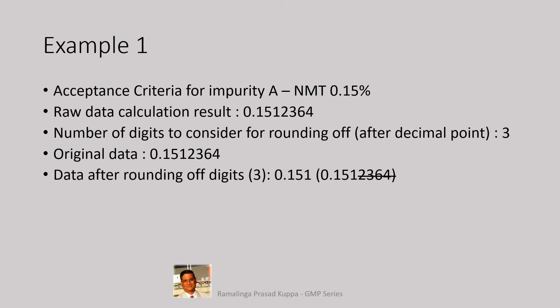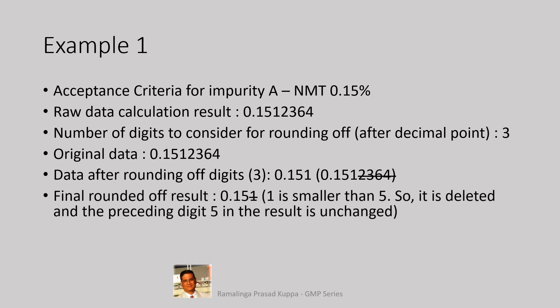Data after rounding off digits 3, it will become 0.151. The last 4 digits in the original result should be ignored. Final rounded off result is 0.15. 1 is smaller than 5, so it is deleted and the preceding digit 5 in the result is unchanged. Again, as prescribed in slide 5, the third digit 1 is smaller than 5 and hence deleted and the preceding number is unchanged. Reported result of impurity A is equal to 0.15%. The final reported value is 0.15%. Decision is passed.